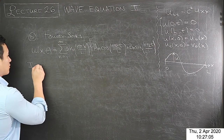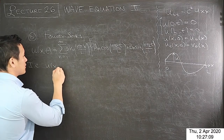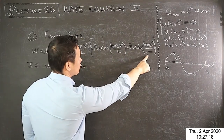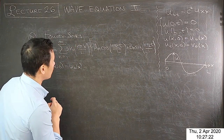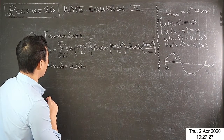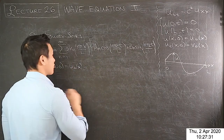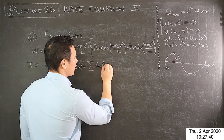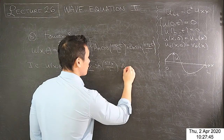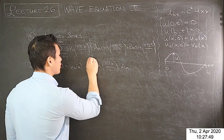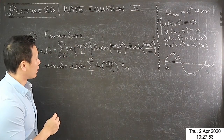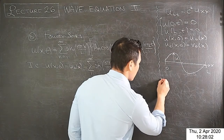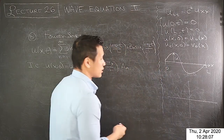Now we apply the two initial conditions. The first is u(x,0) = u₀(x). Substituting t = 0: the sine term disappears and the cosine term becomes 1, leaving the sum from 1 to infinity of a_n times sin(nπx/L). So this u₀(x) function, specified on 0 to L, determines the a_n coefficients.